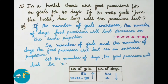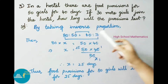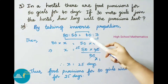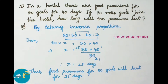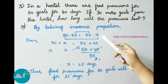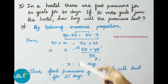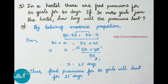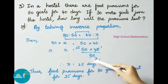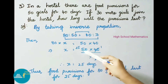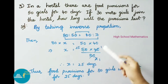By taking inverse proportion: 80 is to 50 equals 40 is to x. We know product of means is equal to product of extremes. So 80 into x equals 50 into 40. That implies x equals 50 into 40 divided by 80. Simplifying: 40 divides into 80 giving 2; 2 divides into 50 giving 25. So x equals 25. Therefore x value is 25 days.